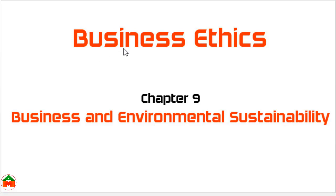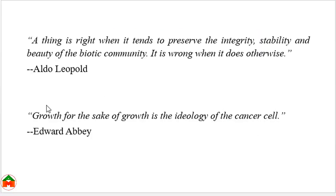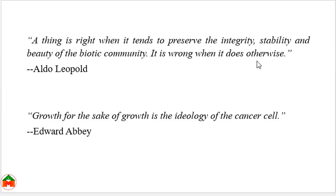Welcome to the tutorial on business ethics. Today the chapter is 'Business and Environmental Sustainability.' The first quote is: 'A thing is right when it tends to preserve the integrity, stability and beauty of the biotic community. It is wrong when it does otherwise.' This means that whenever you are doing something by maintaining the integrity, stability and beauty of the ecological surroundings, you are on the right path.